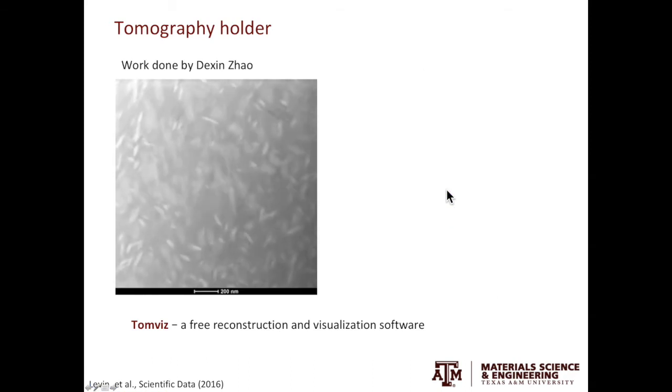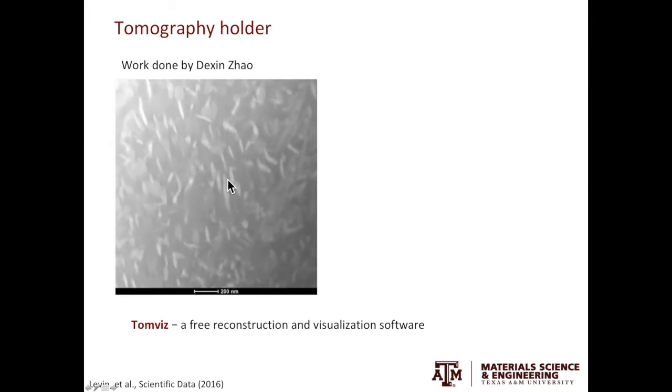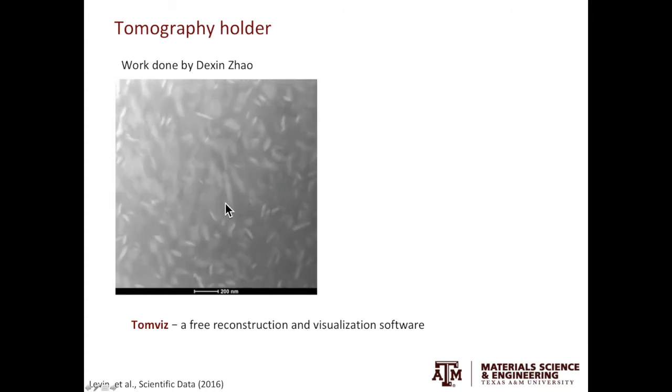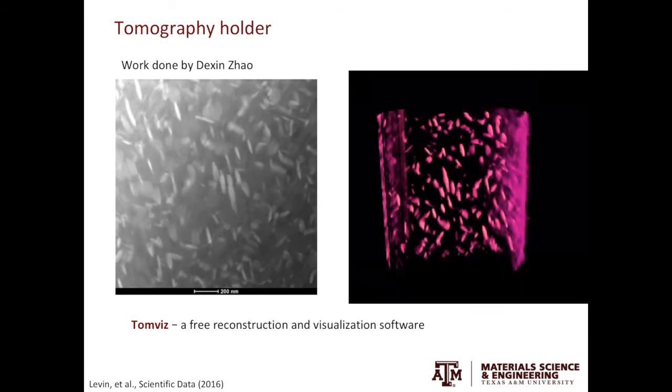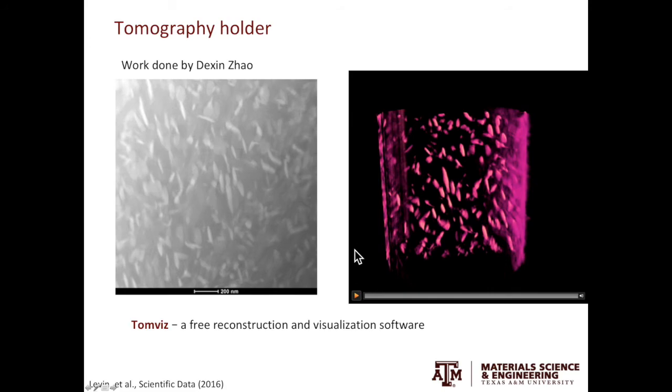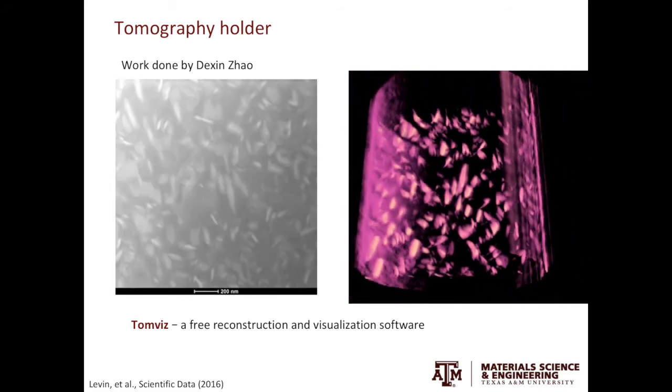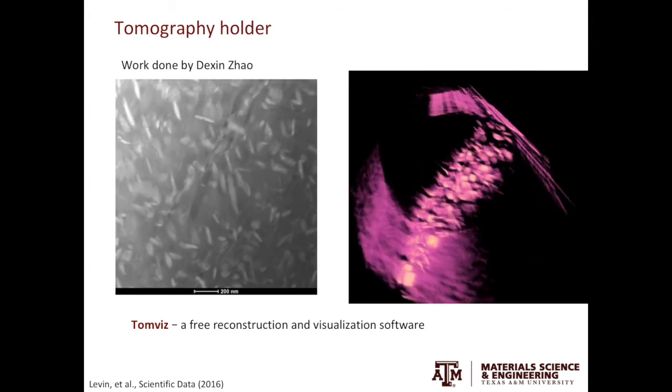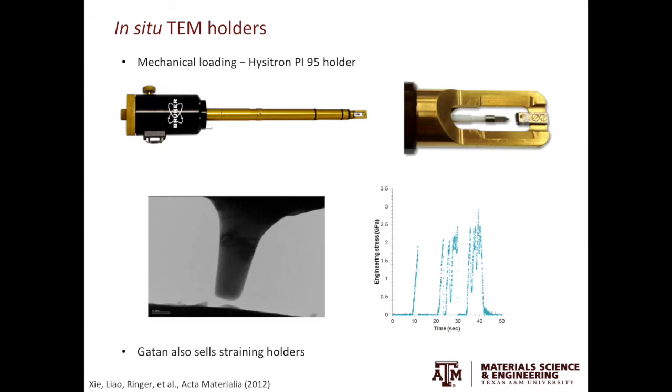This slide shows the TEM tomography work done by my student Dershin. What we are interested in was to reconstruct those nanoprecipitates in a high temperature shape memory alloy. By acquiring the HDF STEM images every 2 degrees, Dershin was able to reconstruct those precipitates in 3D. You can easily obtain the morphology information of those precipitates, and you can easily calculate the volume fraction of those precipitates.